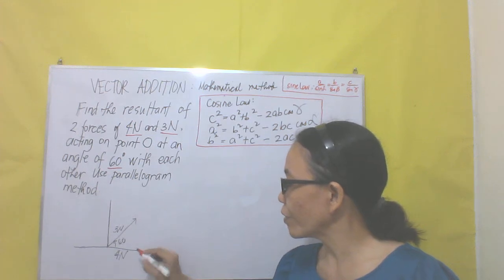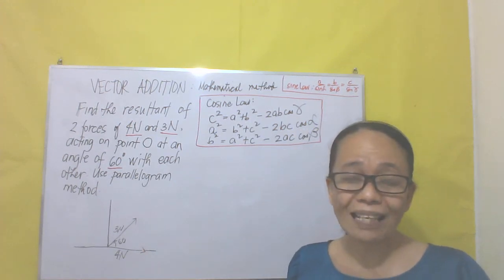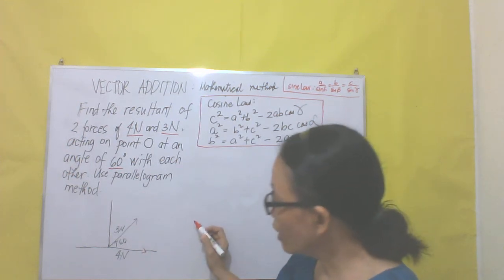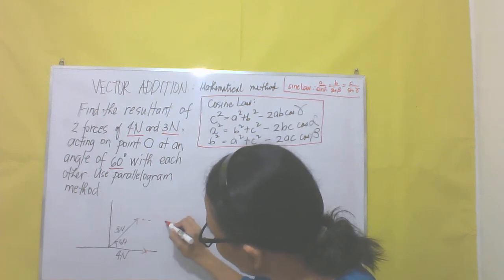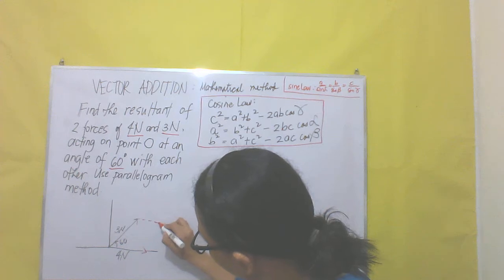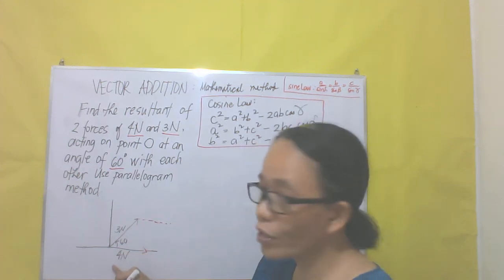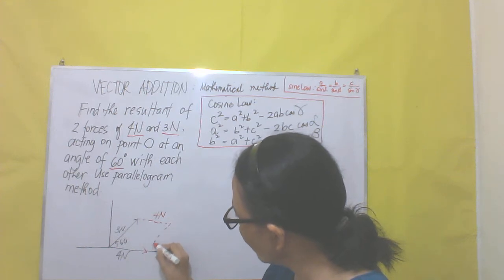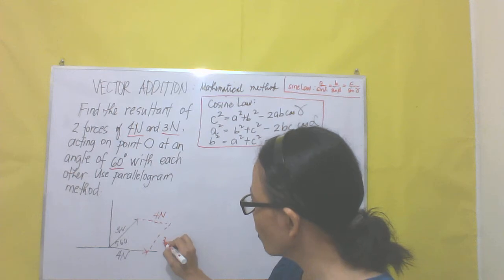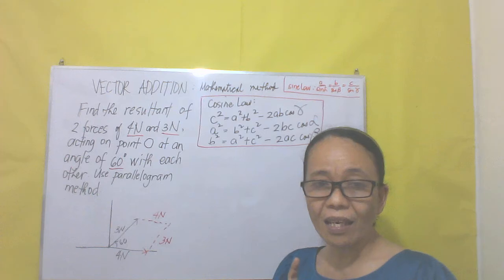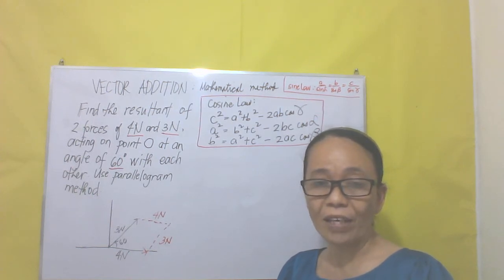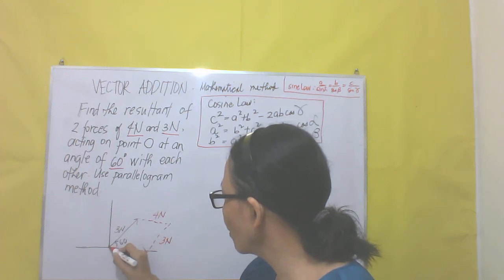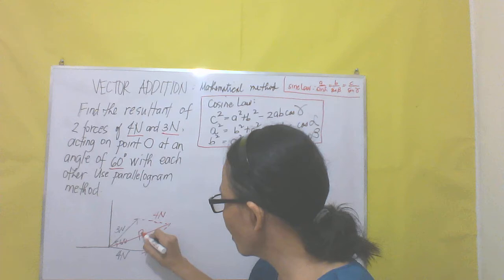So using the parallelogram method, we're going to extend lines in order to make a parallelogram. We're going to draw a line parallel to the force of 4N, which is also equal to 4N. Then we make a diagonal line to determine the resultant vector r. The diagonal line from the origin to this vertex represents our resultant r.